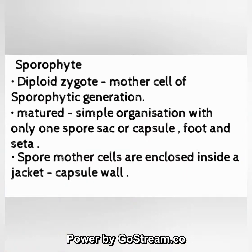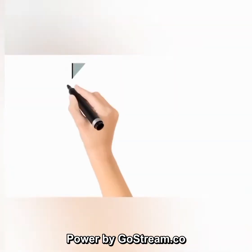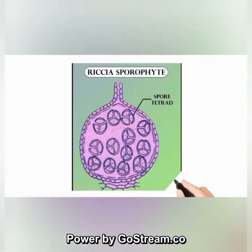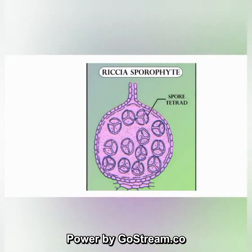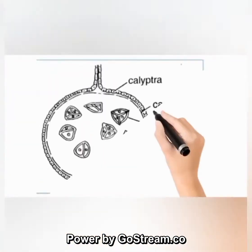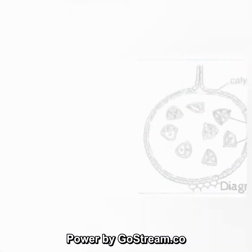Foot and seta are present. Spore mother cells are enclosed inside a jacket (capsule wall). Calyptra — a protective covering — is present. A labeled diagrammatic representation of the sporophyte of Riccia is shown here.